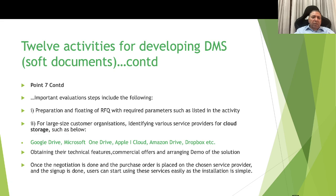Continuing with Activity 7, important steps include preparation and floating of an RFQ (Request for Quotation) with required parameters. For large organizations, identify various cloud storage service providers such as Google Drive, Microsoft OneDrive, Apple iCloud, Amazon Drive, Dropbox, etc. Obtain their technical features and commercial offerings and arrange demos. Once negotiation is done and the purchase order is placed and sign-up completed, users can start using these services easily.